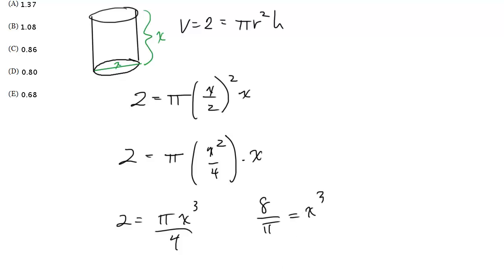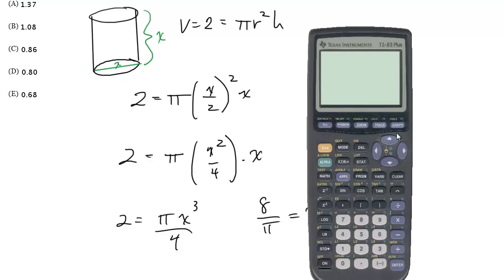And now I can find this answer out directly. So 8 divided by pi and then cube root it. 8 divided by pi. And then I will cube root it. And get 1.37.